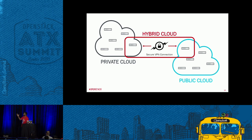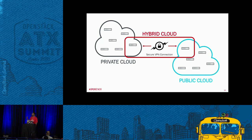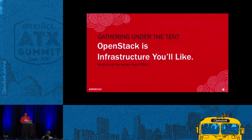With private and hybrid clouds, you have a secure VPN connection sitting between the two and at any point you can move resources back and forth. If something in your private cloud is starting to gain a lot of traction, or you have an event needing a mass increase in traffic, you can shoot your application over to the public cloud, spin up as many instances as you need for that timeframe, then spin it down and push it back into your private cloud.